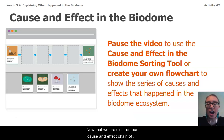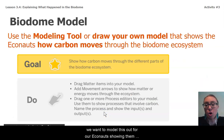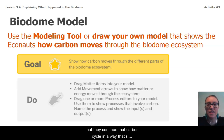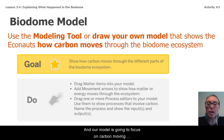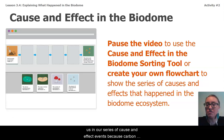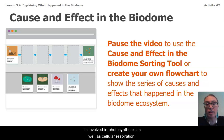Now that we are clear on our cause and effect chain of events that led to the plants and animals in the biodome not having enough energy storage molecules, we want to model this out for our Econauts, showing them how carbon is moving throughout their biodome. Our model is going to focus on carbon moving because carbon has been an important atom in our series of cause and effect events — carbon is in energy storage molecules, and it's involved in photosynthesis as well as cellular respiration.